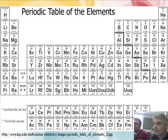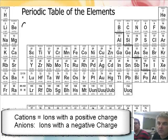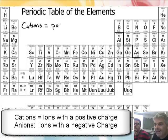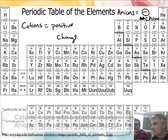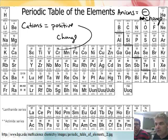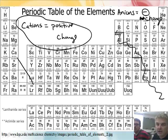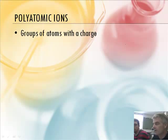One other thing: things with a positive charge, we call them cations. And things with a negative charge, we call them anions. Cations always have a positive charge, and anions are a negative charge. The things on the left side of the staircase on the periodic table tend to be positive, and the things on the right side of the staircase tend to be negative.